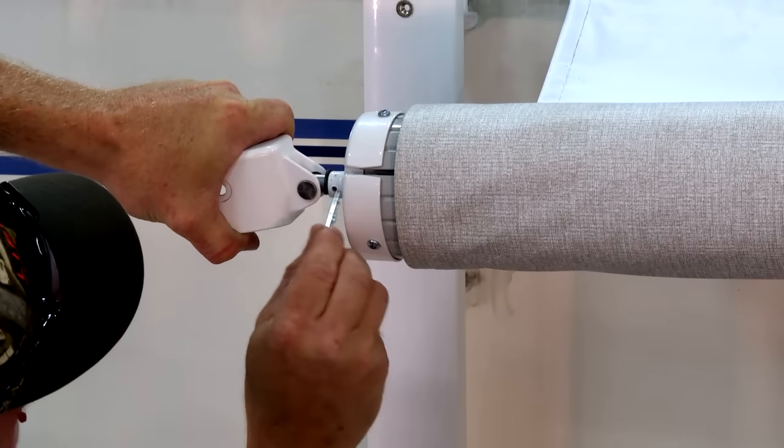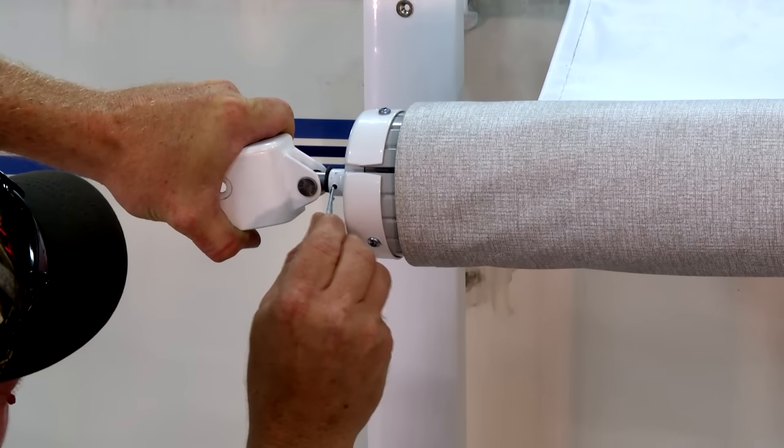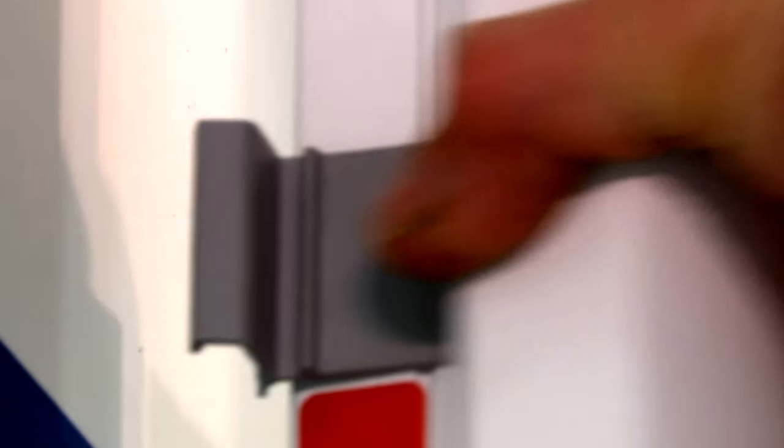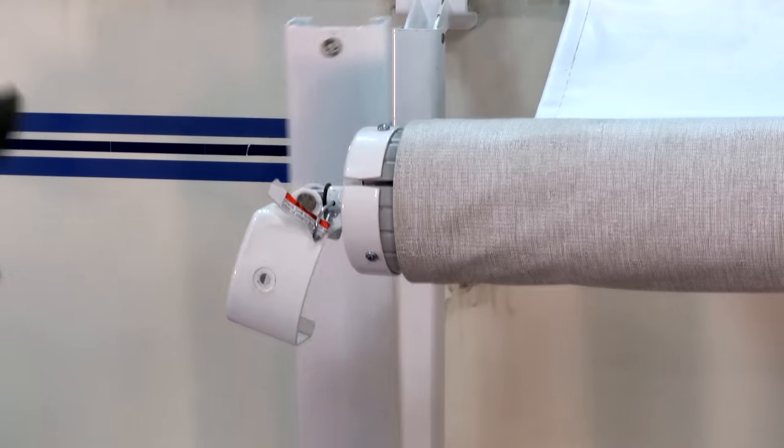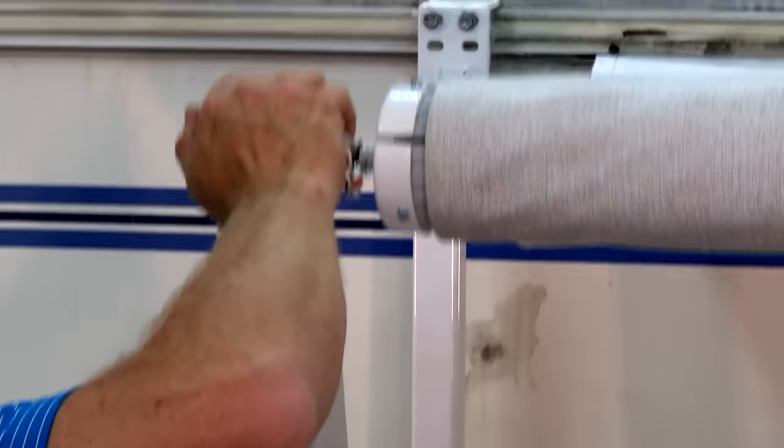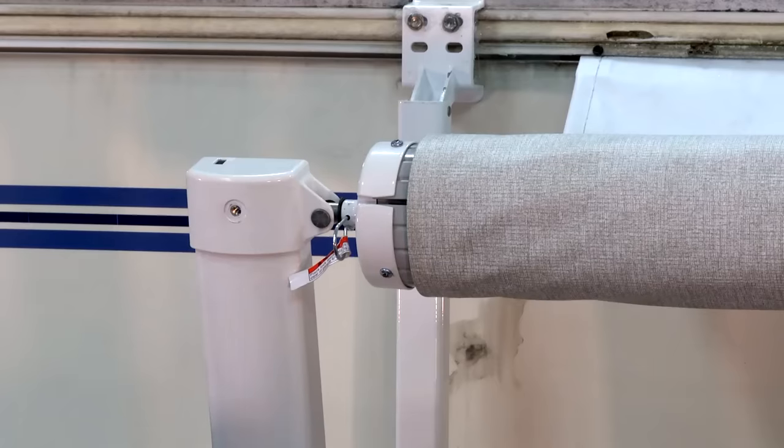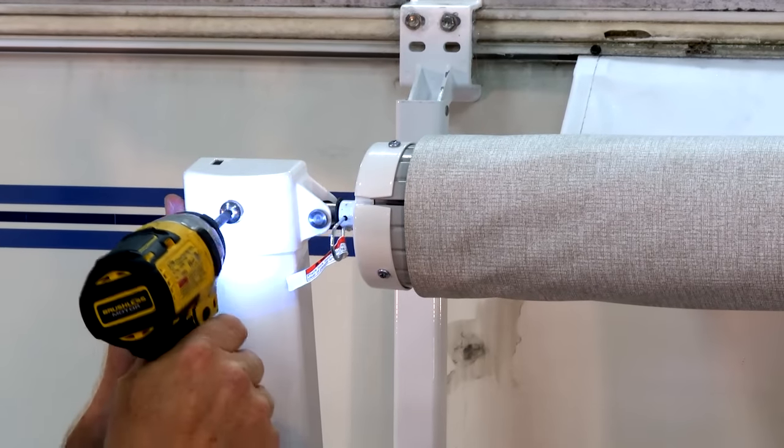Once the tension is set, place the cotter pin back into the end cap. Release the travel lock on the lower arm support and slide the upper arm end cap onto the upper arm. Reinstall the Phillips screw to reattach the upper arm end cap onto the upper arm.